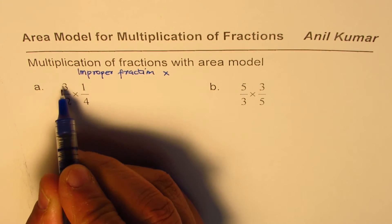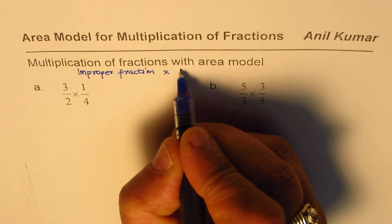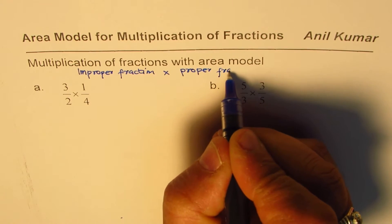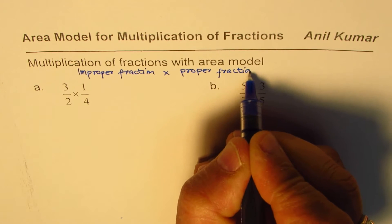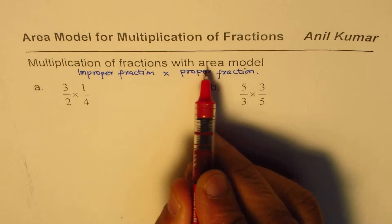Improper fraction because the numerator is higher than denominator. Times proper fraction. So the first one is 3 over 2 times 1 over 4. We will apply the area model.